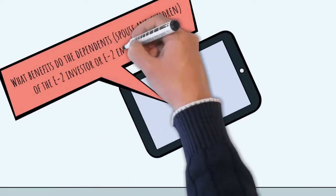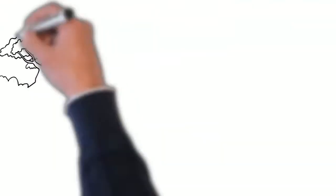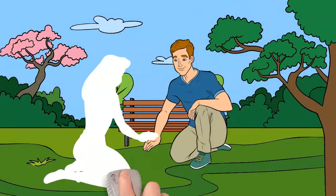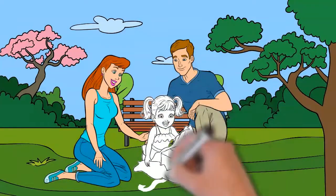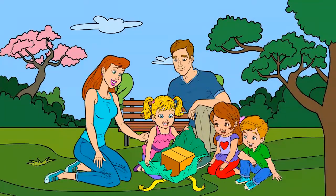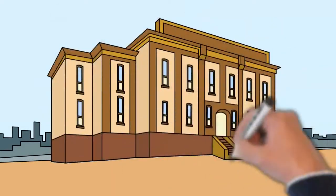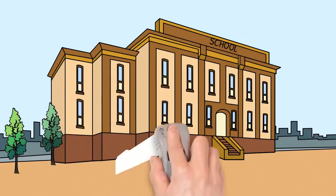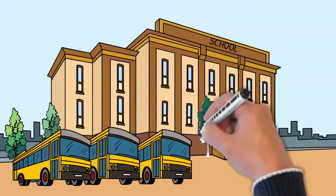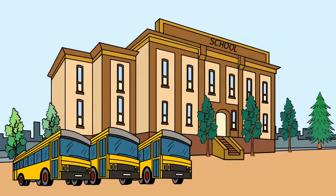What benefits do the dependents — spouse and children — of the E2 investor or E2 employee receive? In addition to often being the ideal visa option for entrepreneurs who want to start or grow a business in the United States, whether they have a startup, are opening a franchise, or are buying an existing business, the E2 visa can be issued for up to five years and can be renewed indefinitely. The dependent spouse and children of the principal E2 investor or E2 employee also receive benefits. Specifically, the spouse can work and study in the United States, and the children can enroll in school. As of January 2022, the spouse of a principal E2 visa holder receives work authorization automatically as part of their status, meaning they no longer need to apply for a separate work permit upon arrival in the United States.